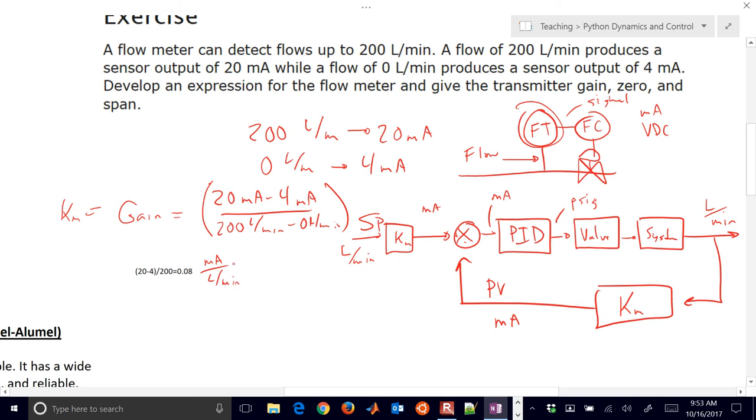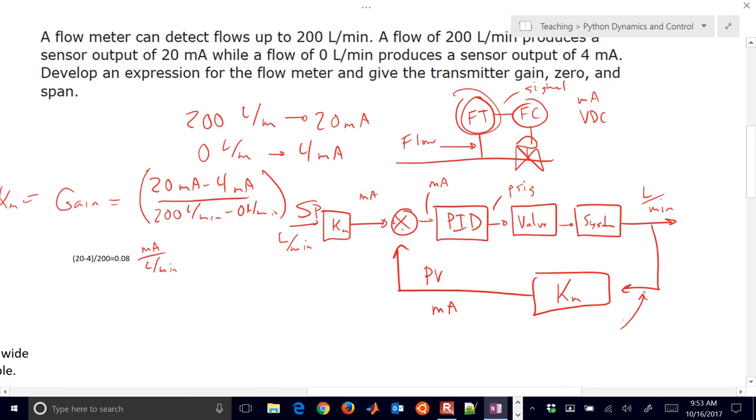So I'm going to take whatever signal I had here, and I'm going to multiply it by that gain, and it's going to produce a milliamp signal. And also the same thing with my set point right here. It's also going to produce a set point that's in milliamps. And then I'm going to compare them there, and that's going to be the input to my PID controller.